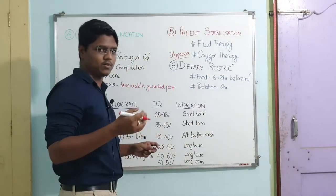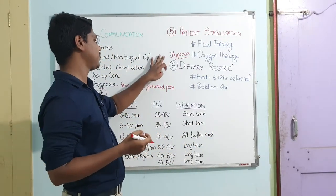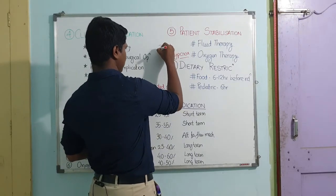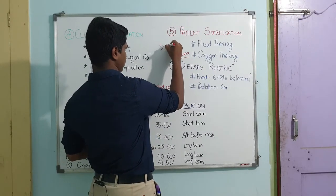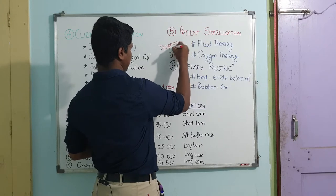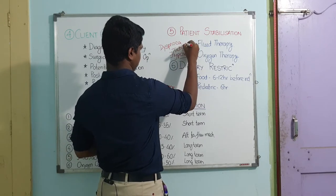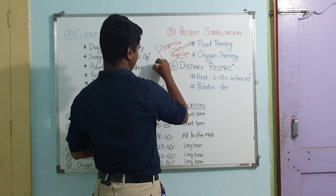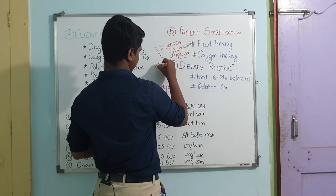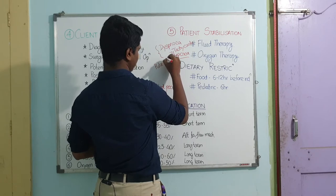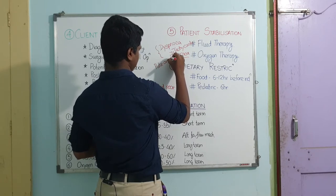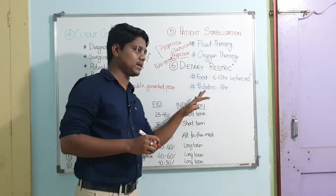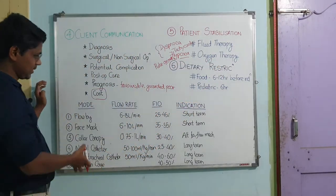The signs of hypoxia — as you must know from COVID cases — are mainly dyspnea and tachycardia; these two are very prominent signs. Apart from this, you can go for pulse oximetry, which you are also using in humans, to know the oxygen requirement. These are some methods by which oxygen is delivered to the patient.